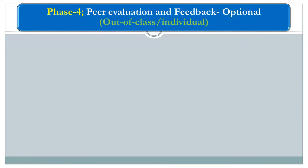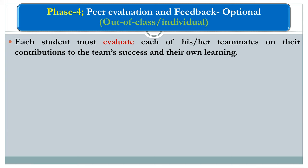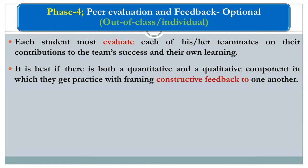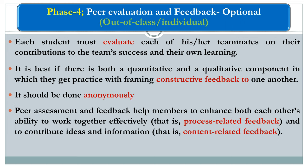Phase four is peer evaluation and feedback, conducted out of class individually. Each student must evaluate each teammate on their contribution to the team's success and their own learning. It is better to have both qualitative and quantitative components, and students must practice forming constructive feedback for one another. It should be done anonymously. This peer assessment helps members enhance both their ability to work together effectively — process-related feedback — and to contribute ideas and information — content-related feedback.